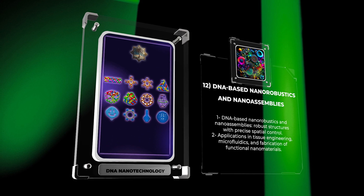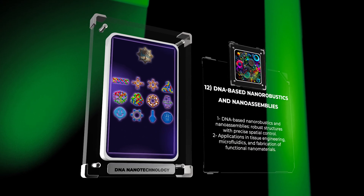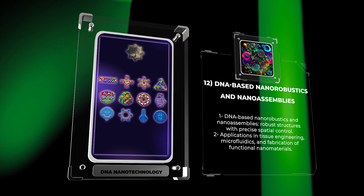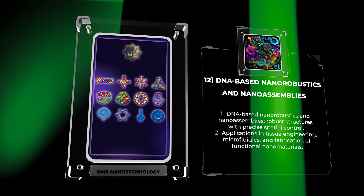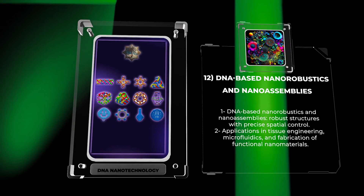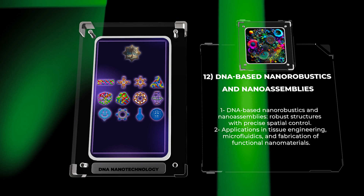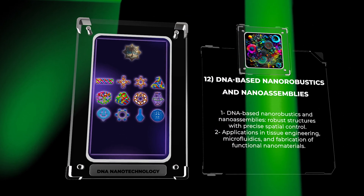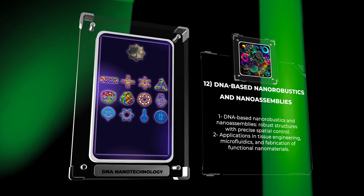For example, DNA-based nanostructures can be used to create self-assembling scaffolds for tissue engineering or to construct microfluidic devices for precise fluid manipulation. DNA nanoassemblies, on the other hand, can serve as templates for the fabrication of functional nanomaterials with unique optical, electrical, or magnetic properties.